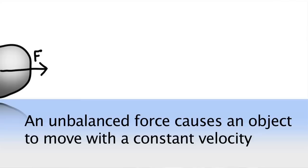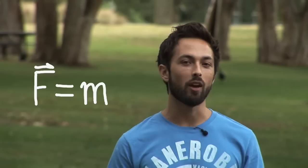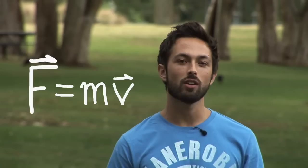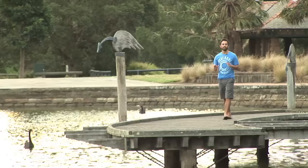Derek's second incorrect law of motion is that an unbalanced force causes an object to move with a constant velocity. We could express this in an equation where the unbalanced force, F, equals the mass, M, times the velocity, V. So if you double the force, the velocity also doubles. It's just like being in a car — as you press on the accelerator, you increase the force on the car, and therefore you move to a new, higher constant speed.